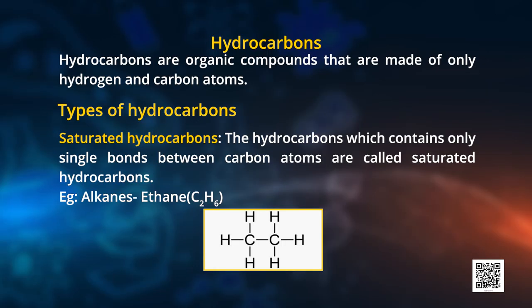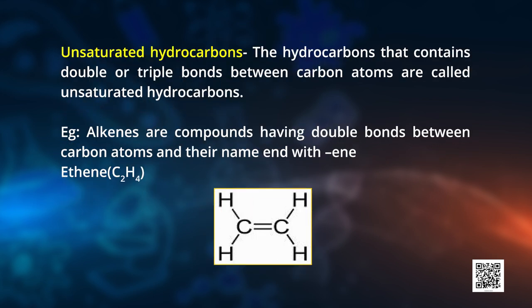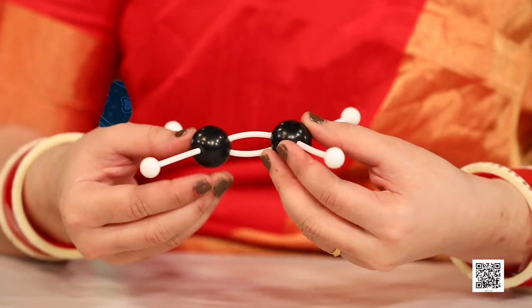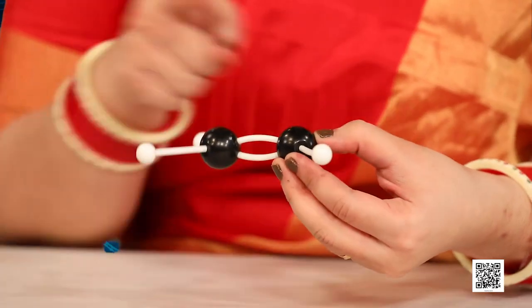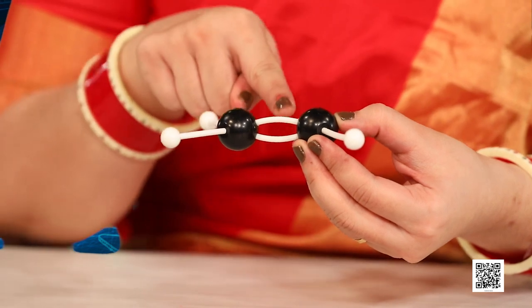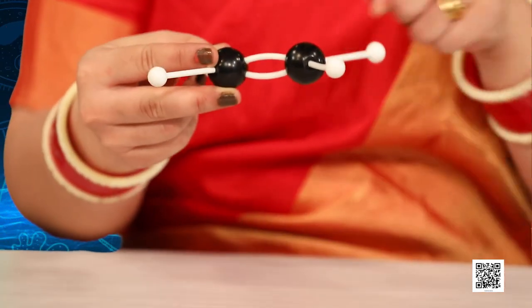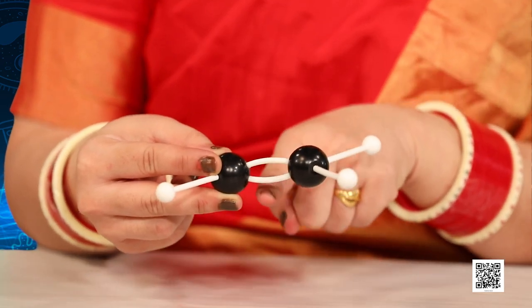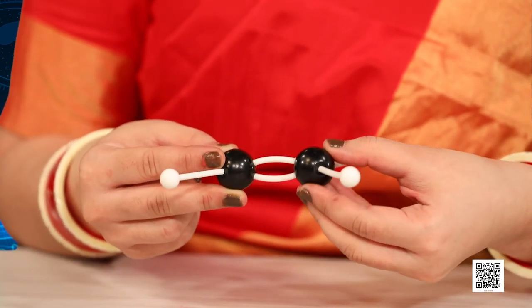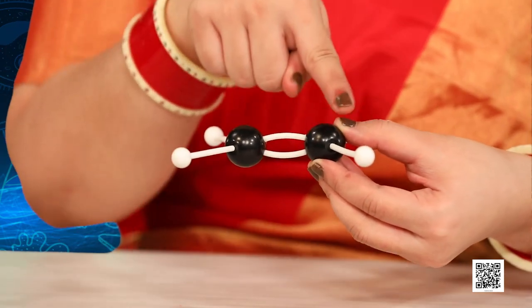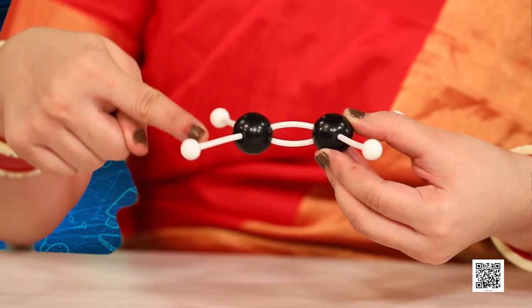The example of saturated hydrocarbons are alkanes. The other type is unsaturated hydrocarbons. In unsaturated hydrocarbons, you have a structure where in between two carbon atoms you have a double bond. Two carbons are attached with a double bond, and in order to satisfy tetravalency, each carbon is bonded with two hydrogens. These hydrocarbons in which a double bond is present between carbon atoms are known as alkenes.